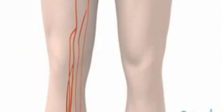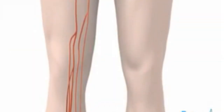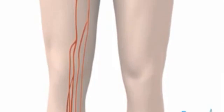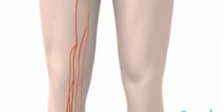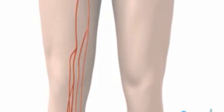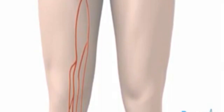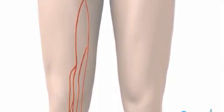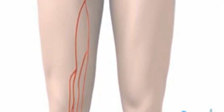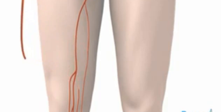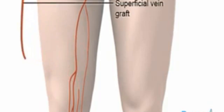If blood vessels from your leg or arm are being used for grafts, your surgeon will remove and prepare these first. A blood vessel, such as a superficial vein in the leg, which lies just below the surface of the skin, can be removed to use as a graft.